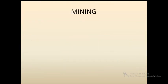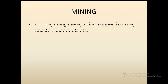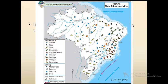The next important occupation is mining. The minerals found in Brazil include iron ore, manganese, nickel, copper, bauxite, tungsten, diamonds, etc. Mining is developed in the highland regions and in the eastern part of Brazil.